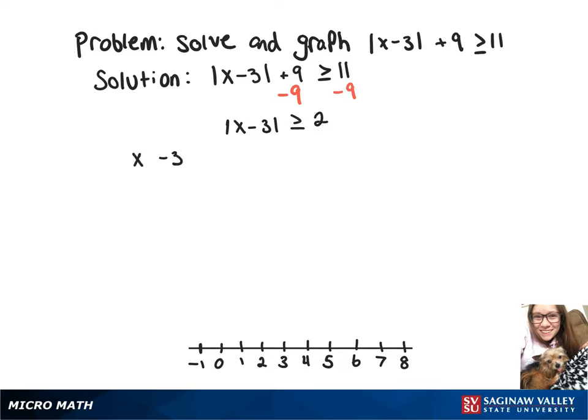So that means we've got x minus 3 is greater than or equal to 2, or x minus 3 is less than or equal to negative 2.